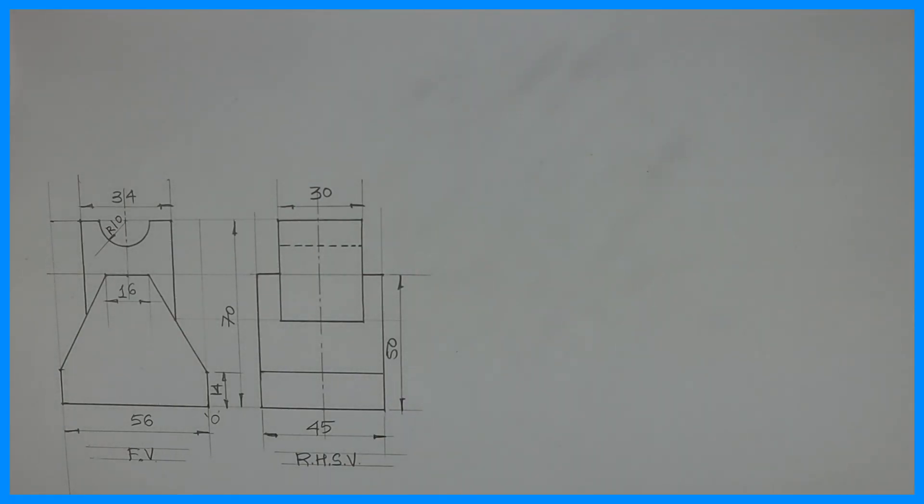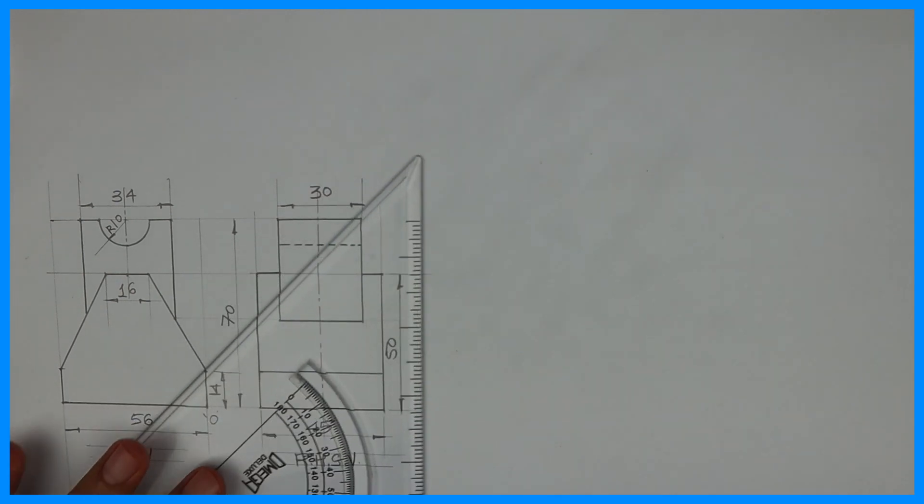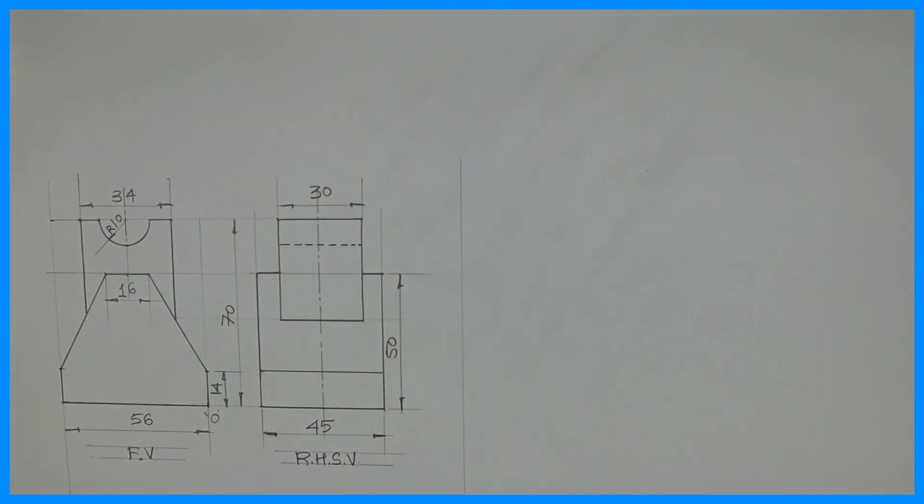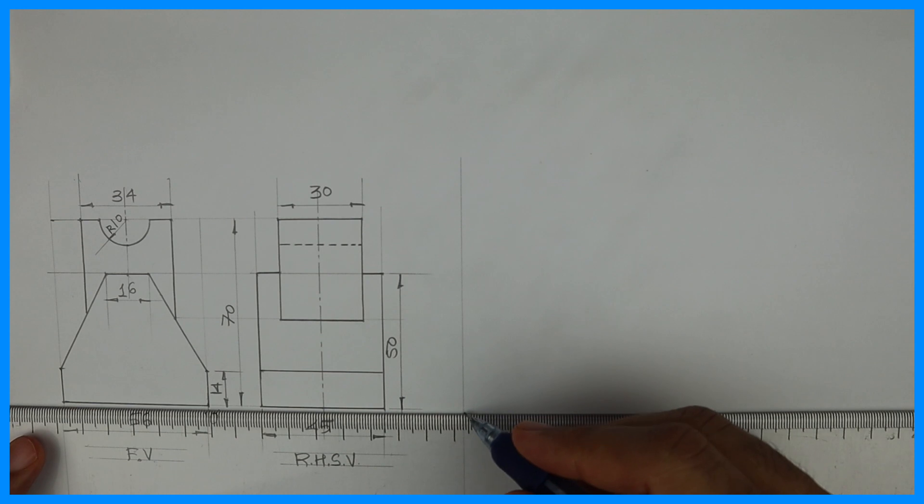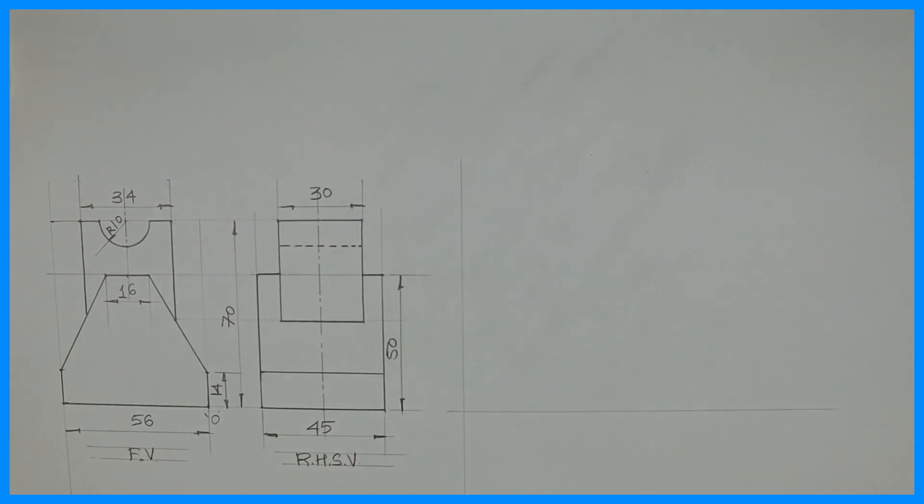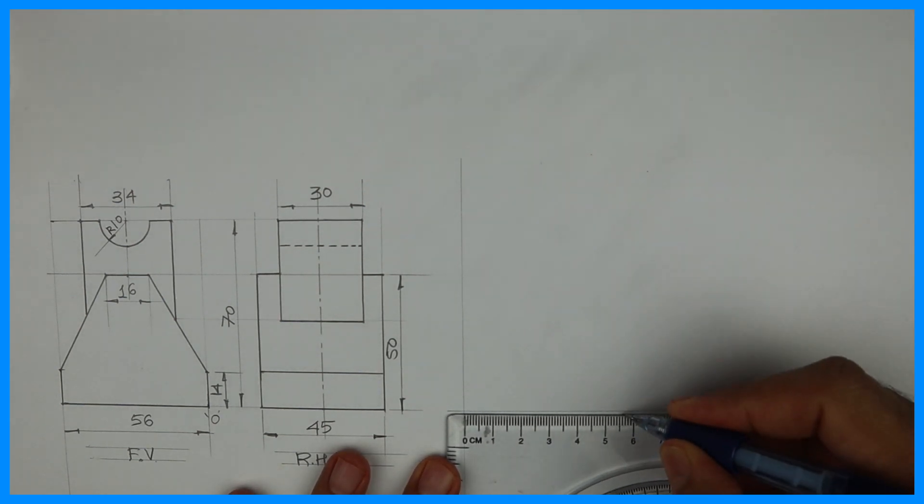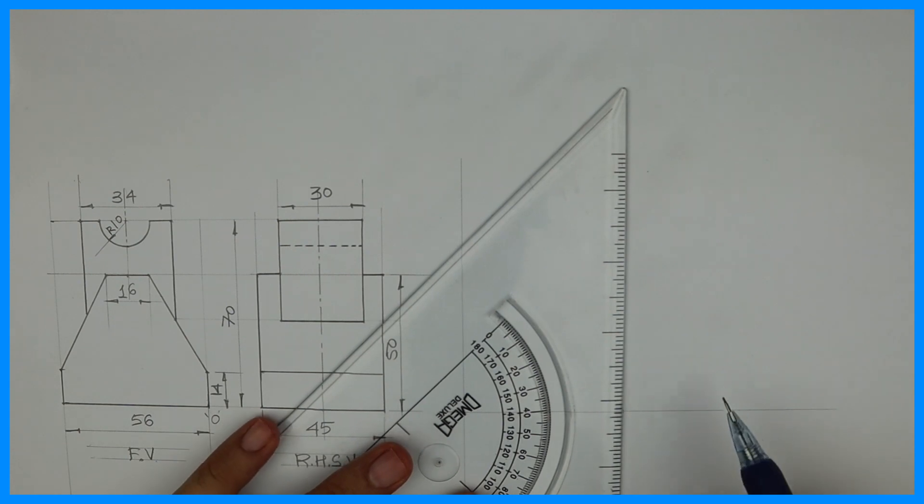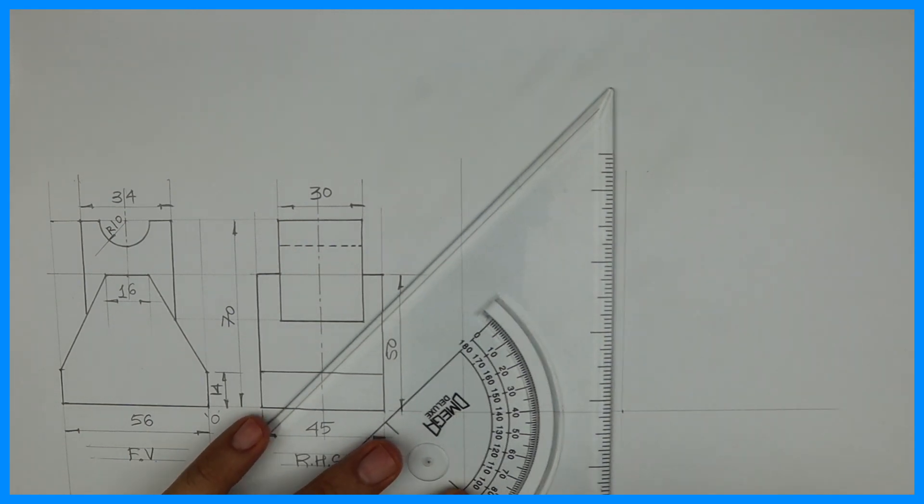Welcome to technical drawing. Today we are going to draw this sum in oblique. If you see this, they have given front view and right-hand side view. If you see carefully, the right-hand side view is on the right side, so it's a third-angle sum. But what we need to focus on is the origin.